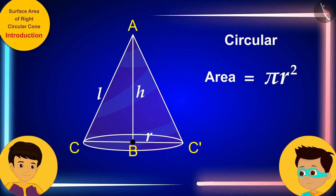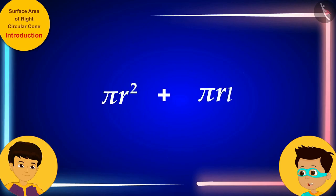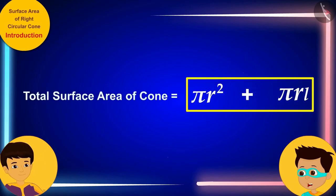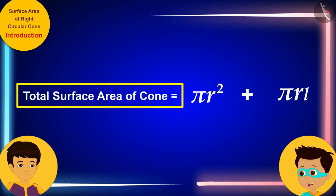Now, if we add it to the formula for the curved surface area of the cone, then, we will get the formula of total surface area of the cone.